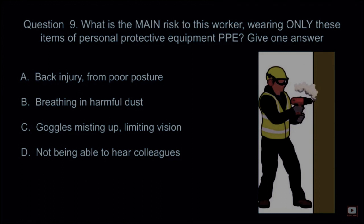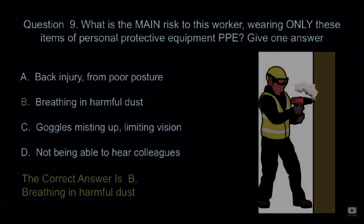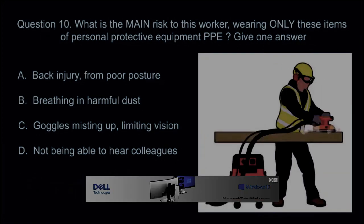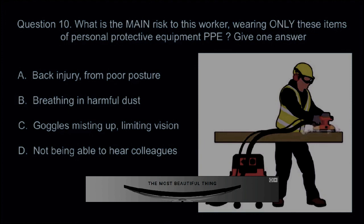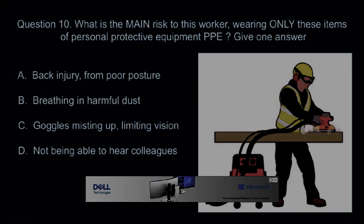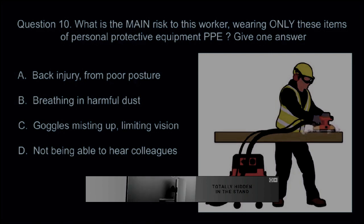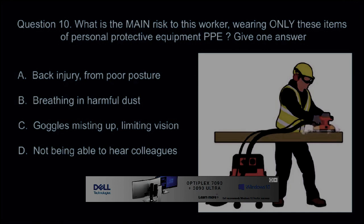Question 9: What is the main risk to this worker wearing only these items of personal protective equipment (PPE)? Give one answer. A: Back injury from poor posture. B: Breathing in harmful dust. C: Goggles misting up and limiting vision. D: Not being able to hear colleagues. The correct answer is B: Breathing in harmful dust.